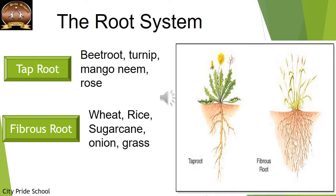The root system arises from the radical of the embryo, meaning from the seed. Inside the seed we find two basic structures: one is a plume and one is a radical. When the radical grows, it gives rise to the main primary root and then there are many branch roots that arise. This type of root that develops from the radical directly, present as a primary root having many branches, is termed as the tap root system.